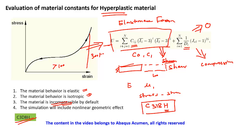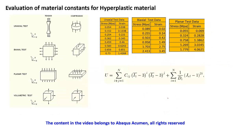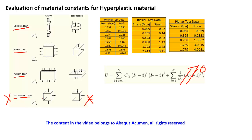As an engineer, if you have to simulate a rubber component you require four types of tests: a uniaxial test, a biaxial test, a planar test, and a volumetric test. If the material is incompressible then you don't require the volumetric compression test, so it comes down to three tests total.